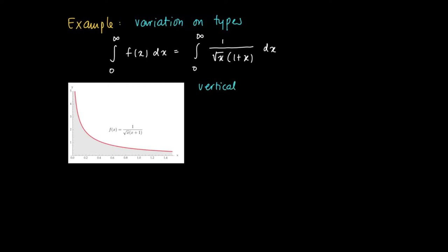at 0, a vertical asymptote. We also have an infinite interval, an unbounded interval. This is the other kind of improper integral we discussed before. So how to deal with this one?